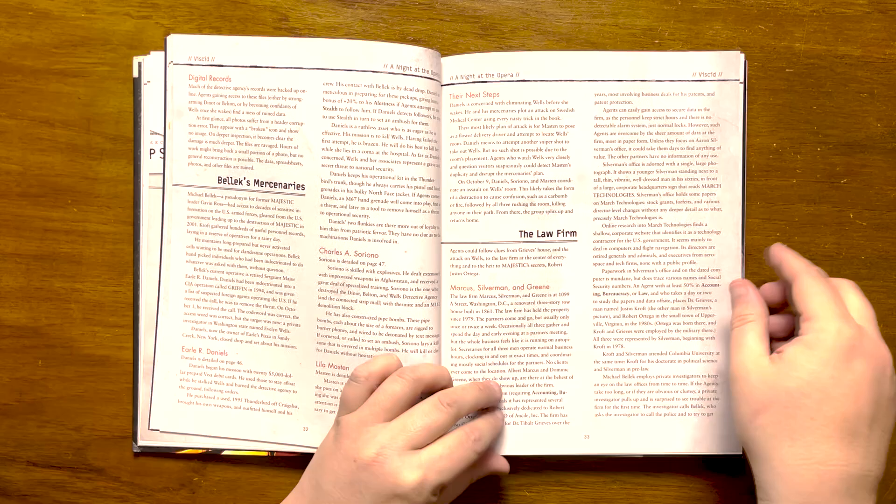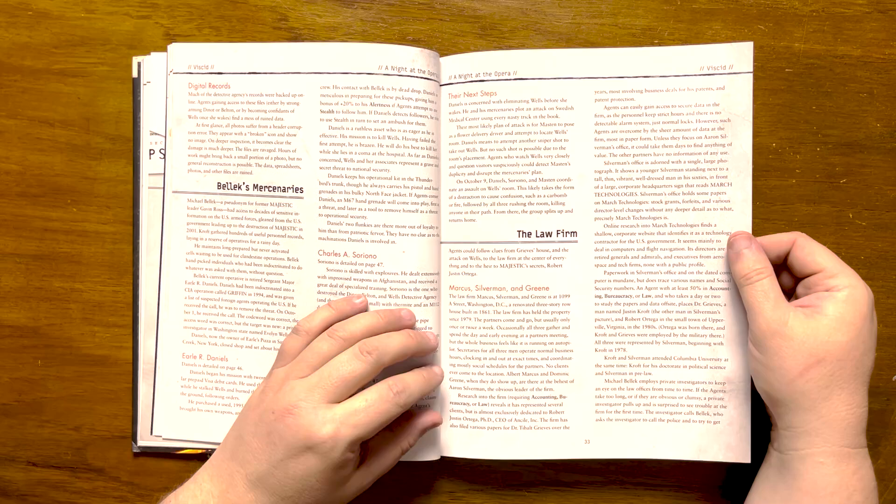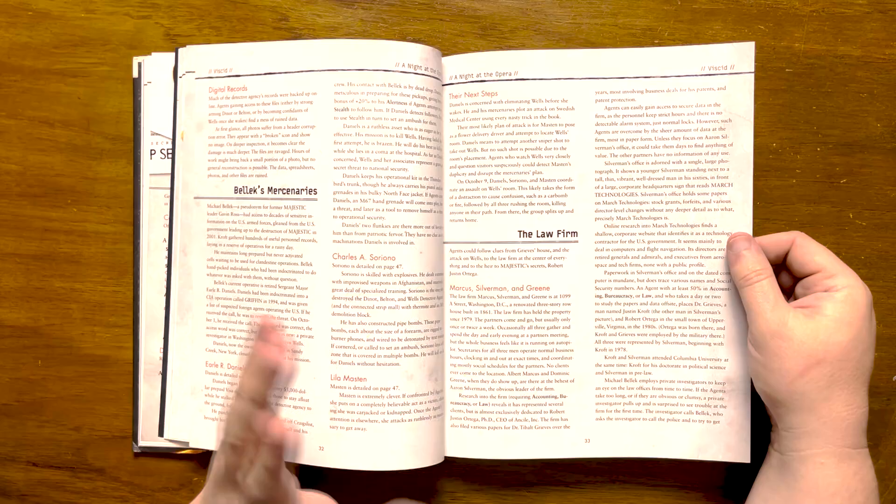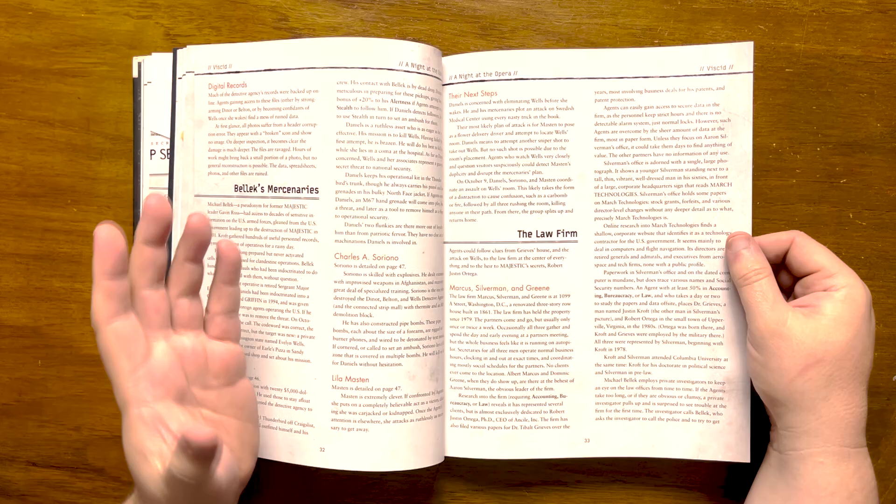After this, we have the law firm Marcus Silverman and Green. It gives details on the firm's history and how they are almost exclusively dedicated to Robert Justin Ortega's firm, Anseelink Ltd. Access can easily be gained to their offices due to the staff keeping strict hours, but the sheer amount of data, mostly in paper form, may overwhelm them.